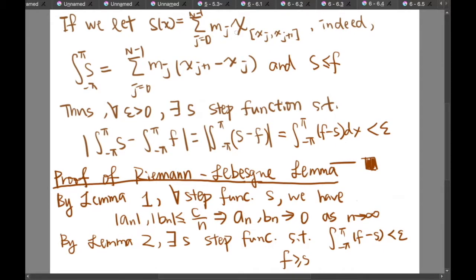After introducing the two lemmas, we can now prove the Riemann-Lebesgue lemma. By Lemma 1, for any step function s, we have that the absolute value of a_n and the absolute value of b_n are smaller than or equal to C over n. That means a_n and b_n will tend to 0 as n tends to infinity by the sandwich theorem. And by Lemma 2, there is a step function such that the integral from negative pi to pi of f minus s is smaller than epsilon.